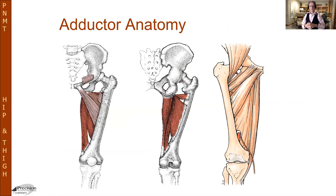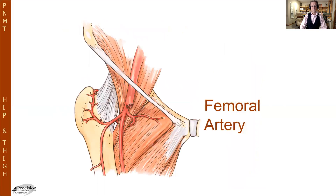Last but not least, familiarize yourself with the adductors. We won't spend a lot of time with them in the seminar, but if there's one adductor to focus on, it is definitely the adductor magnus — which in many ways is the fourth hamstring, both functionally and in symptom presentation. And when talking about adductors, always be aware of and able to locate through palpation the femoral artery.